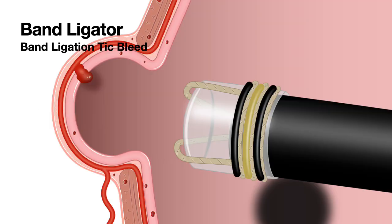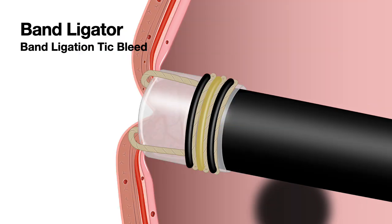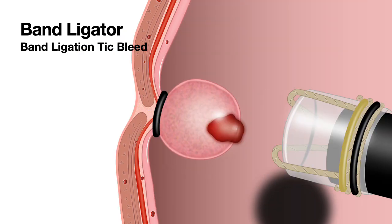Band ligation can also be used for treating bleeding from different arterial sources — a Mallory-Weiss tear bleed, Dieulafoy bleed, or diverticular bleed. These uses have been reported in various cases, but the approved indication is mostly for variceal banding. For diverticular bleeding, you go in, suction the diverticulum, place the band, the diverticulum gets inverted, and the band catches on the bleeding vessel.